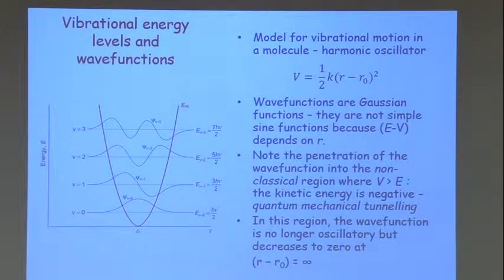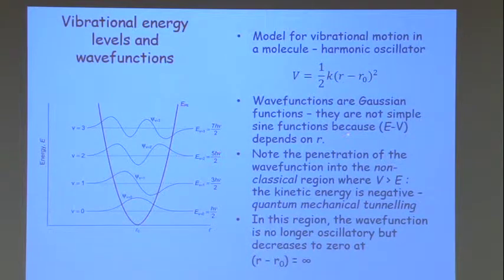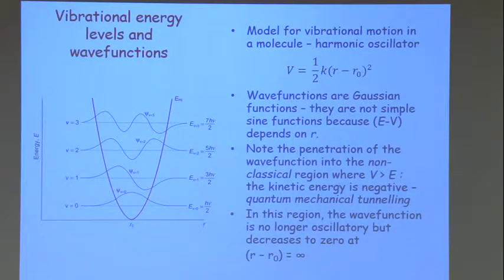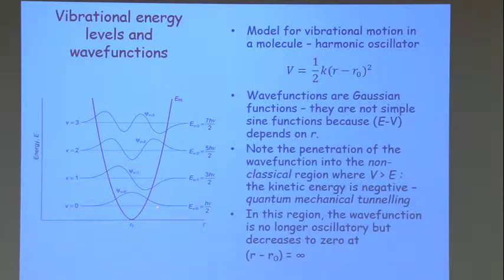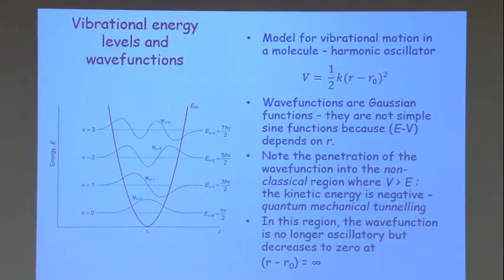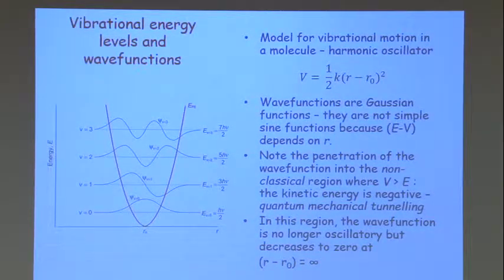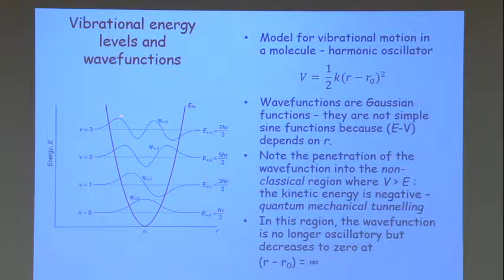It's a little more complicated to solve. The wave functions are no longer simple sine functions — they're Gaussian functions. One important thing is that they penetrate through the potential energy barrier. In this region, the total energy is less than the potential energy, which means the kinetic energy must be negative — an interesting concept. The wavelength decreases as we go up in energy.